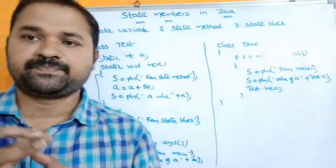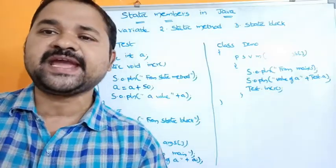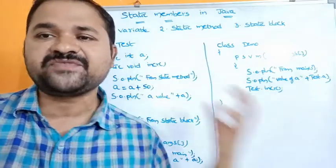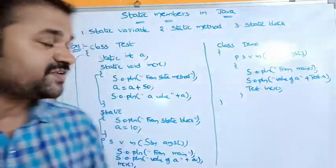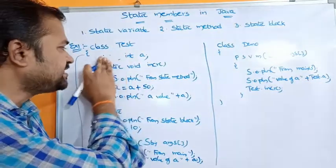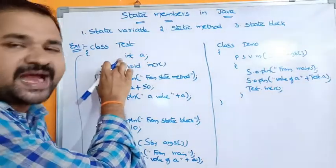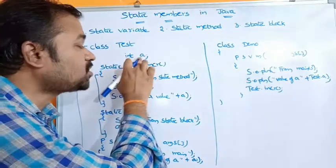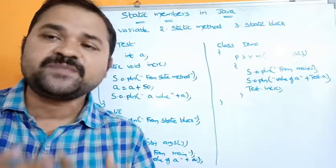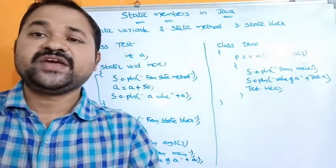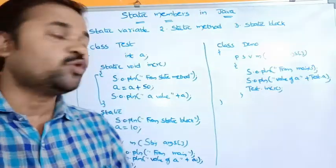The syntax for declaring a static variable is: static, space, data type, space, variable name. Now let's see when the memory will be allocated for the static variable. Coming to the instance variable — the variable which is declared inside a class but without the static keyword — that variable is called an instance variable.